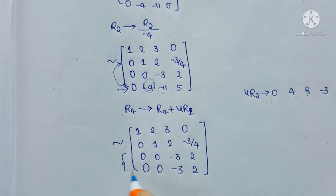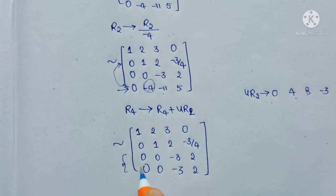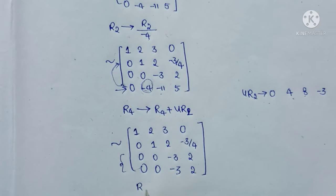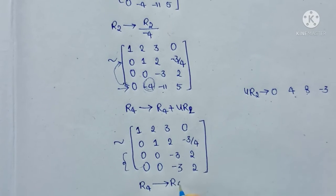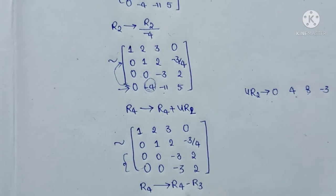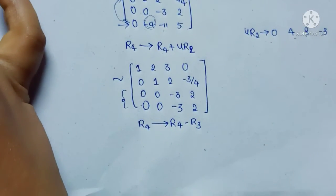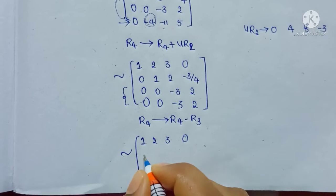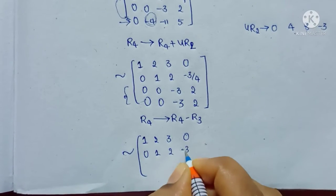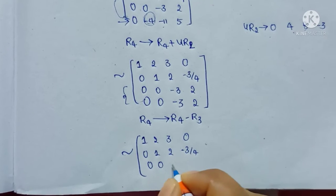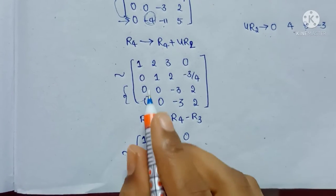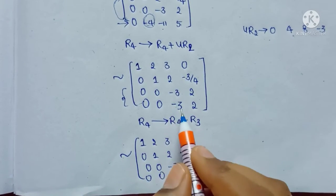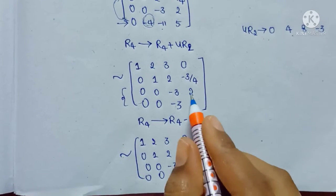Now rows R3 and R4 are similar: both are 0, 0, −3, 2. So we subtract R4 minus R3. R4 is converted into R4 minus R3: 0−0=0, 0−0=0, −3−(−3)=0, 2−2=0. Row 4 becomes all zeros.